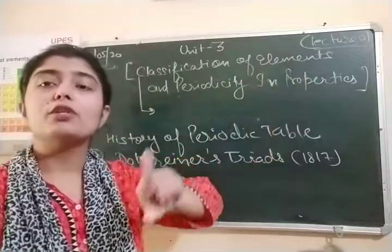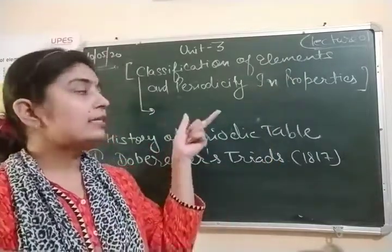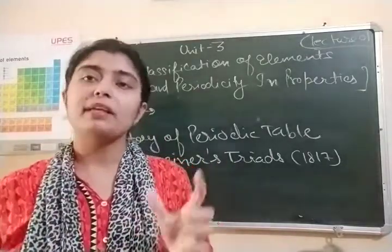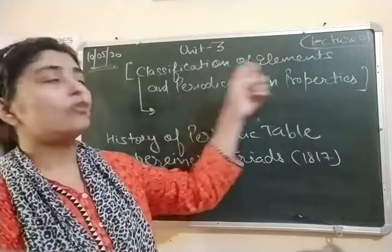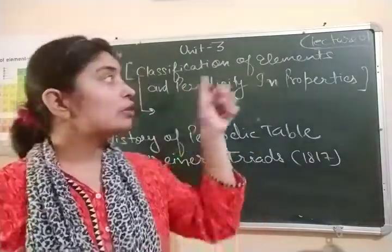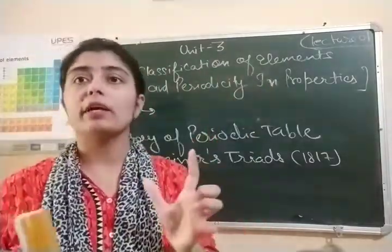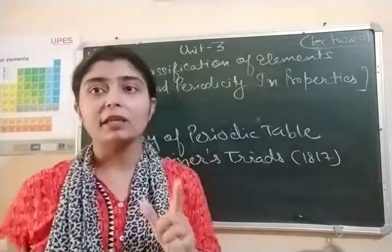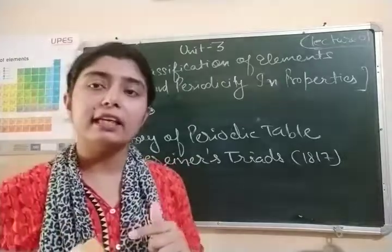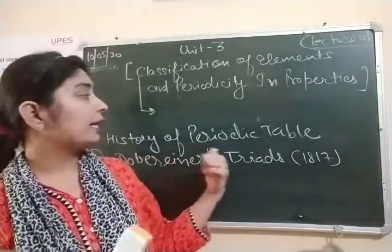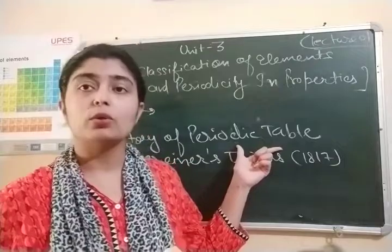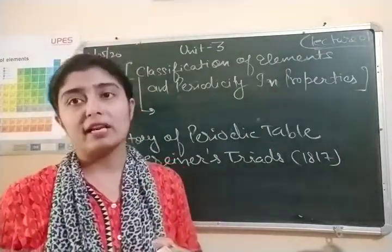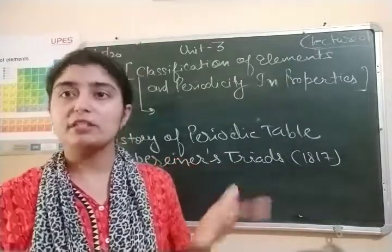So, classification of elements means: the similar elements are grouped together and dissimilar elements are separated from each other. This is the meaning of classification of elements. As 118 elements were gradually discovered, studying them became very difficult. So to study them, a periodic table was devised. To discover a periodic table, scientists came one by one and gave their opinions and suggestions.